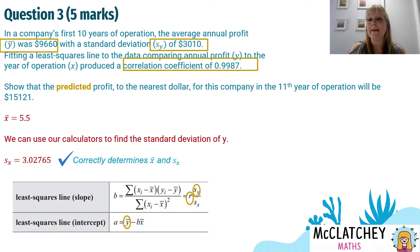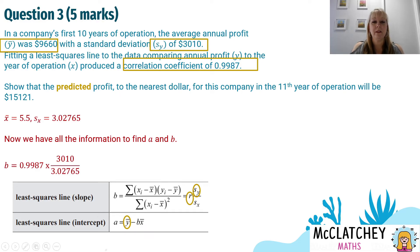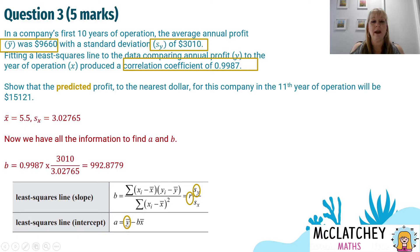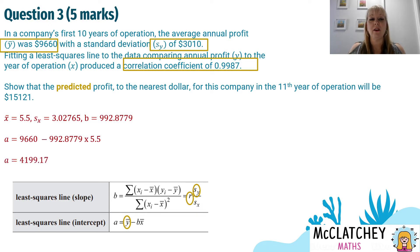Now let's find A and B. We start with B. We substitute in our value for R, our value for the standard deviation of Y (which was given), and divide by the standard deviation of X we just calculated. Our value for B is 992.8779, rounded to four decimal places — and that's a mark for getting B. Now substituting into the formula for A using the mean of Y, B, and the mean of X, we work out A is equal to 4199.17. That's our third mark for determining the value of A.